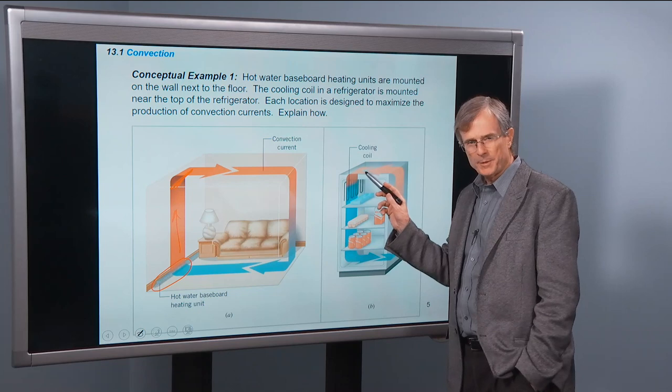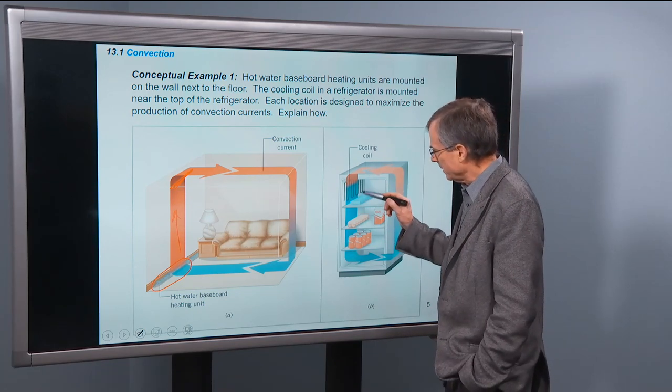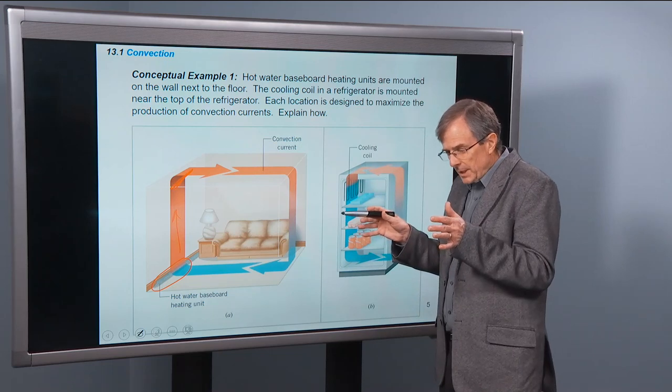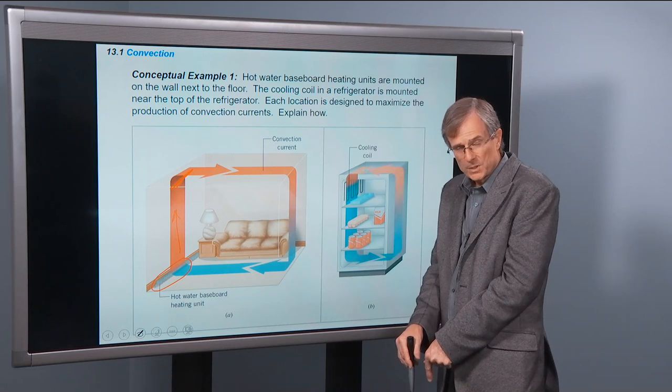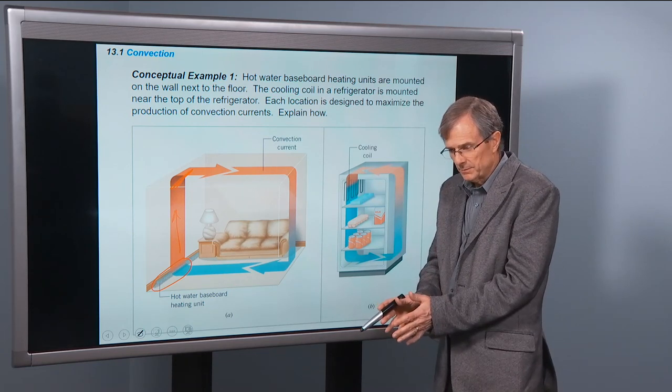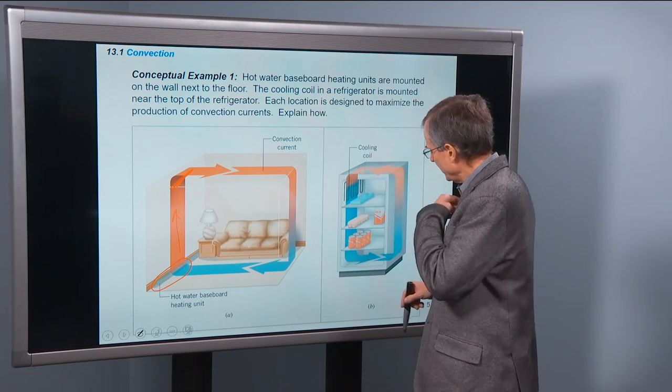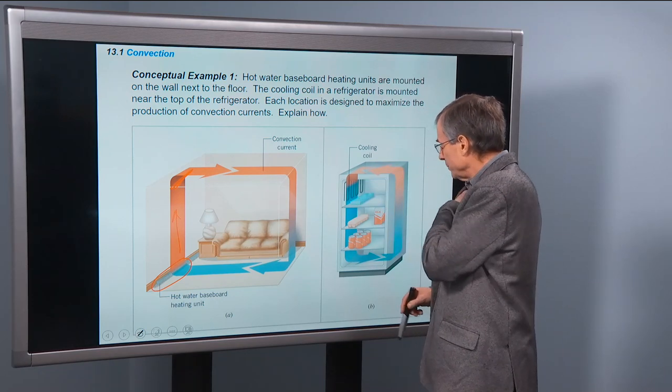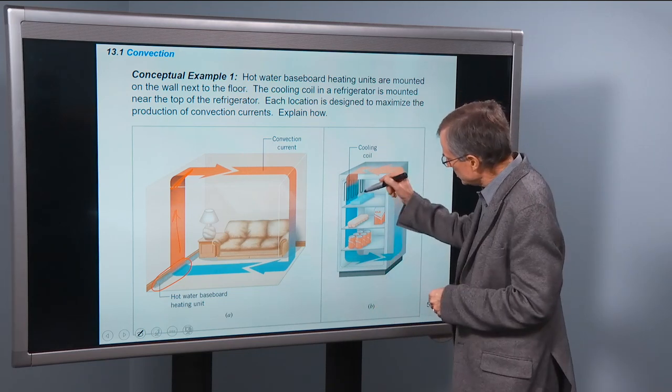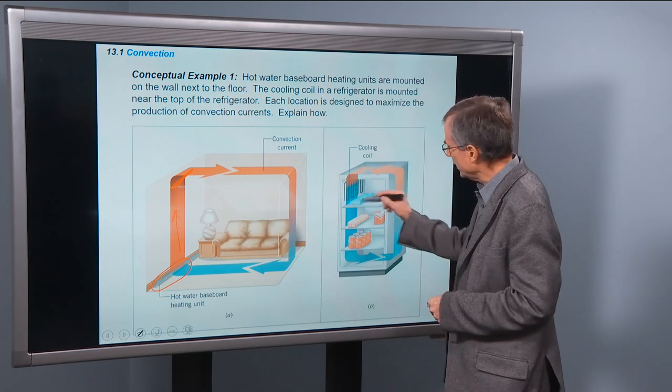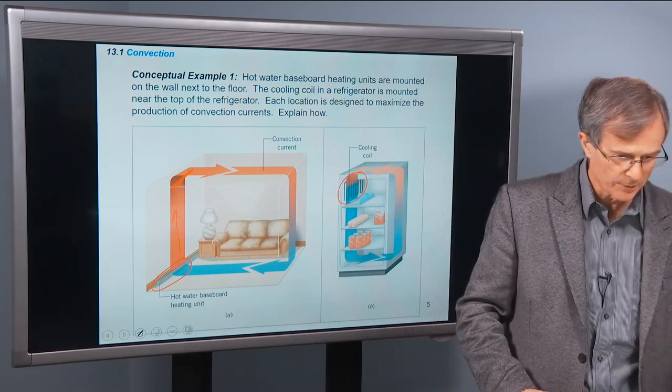On the other hand, putting a cooling unit up near the ceiling does make sense. Why? You cool that air. It, instead of expanding, it contracts and wants to fall down, because it's a higher density now. It's contracted, and the volume is decreased and its density is increased. So it falls, and that's why that cooling unit needs to be up near the top of the refrigerator.